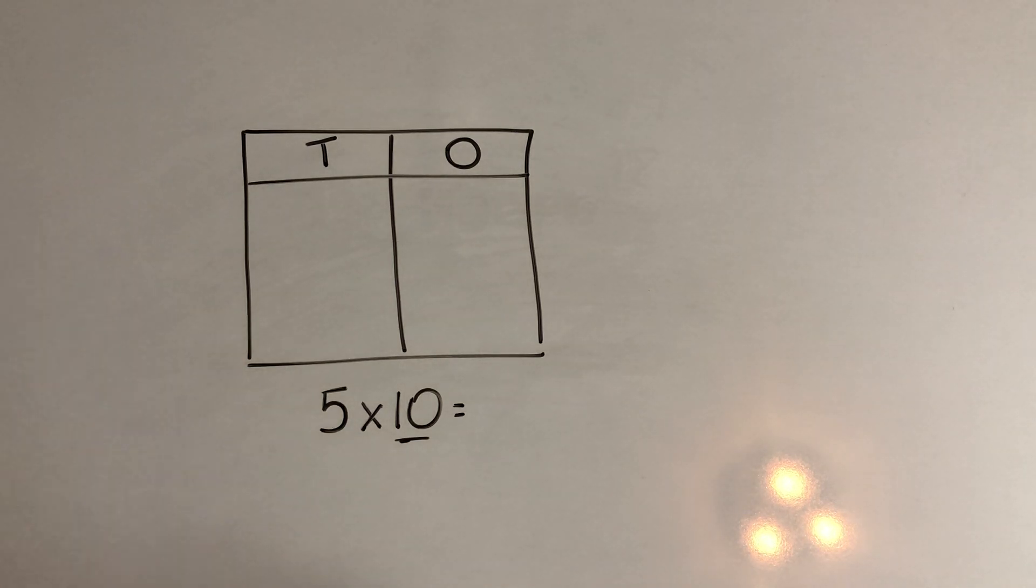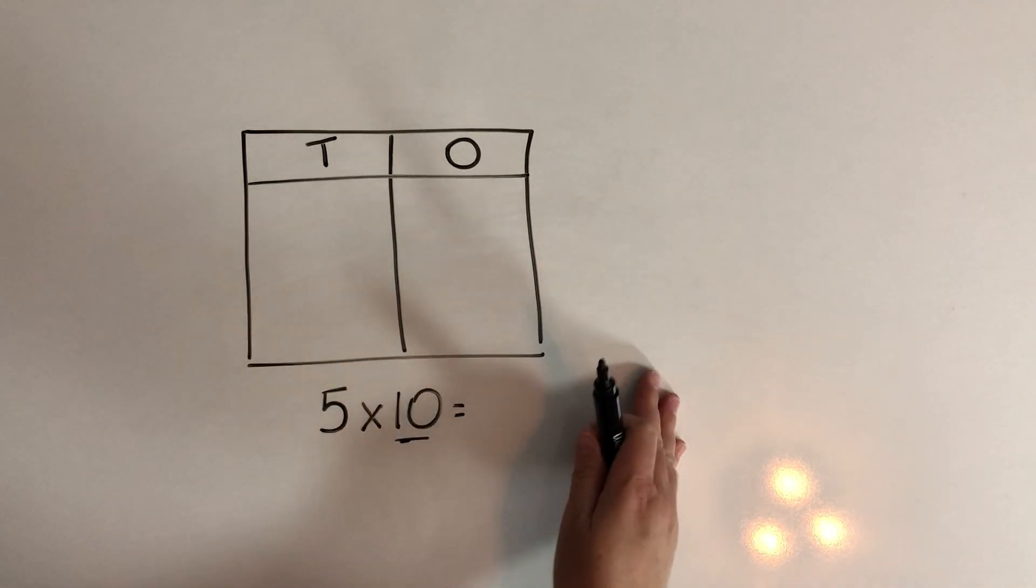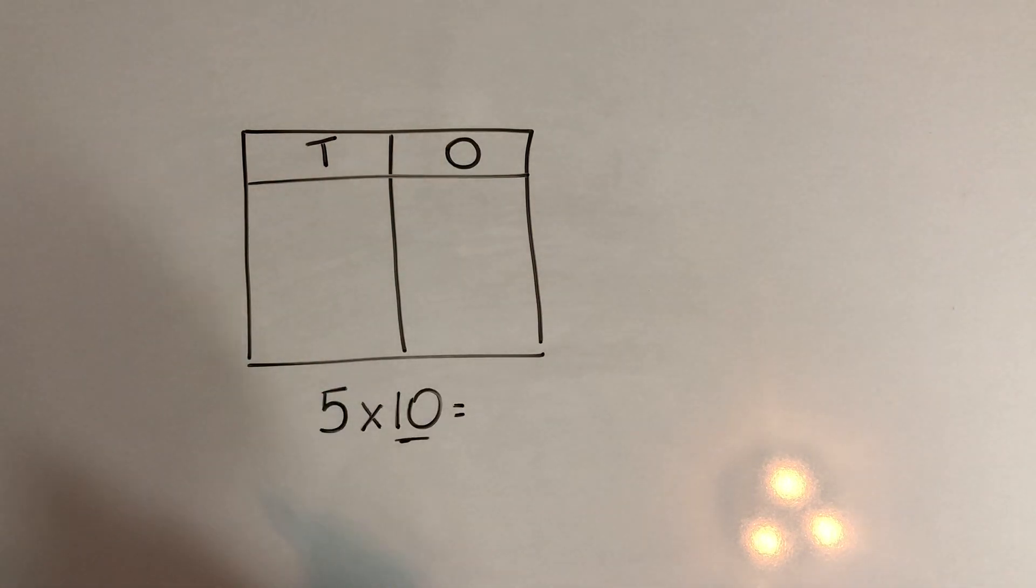Now when we make something 10 times bigger, we can imagine a place value chart like I've written here. So you've probably seen a place value chart before. This column stands for 10s and this stands for 1s. So let's take a look at what's happening here.